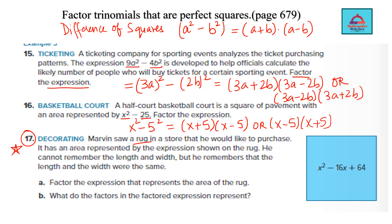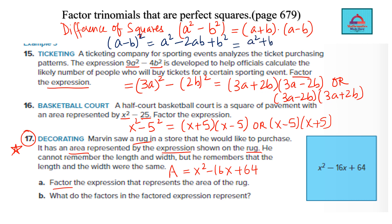A word problem: Marvin saw a rug whose area is represented by x² − 16x + 64. We use the perfect square trinomial identity: a² − 2ab + b² = (a − b)². Here 64 = 8², and the middle term is −2·x·8, which matches the pattern. So the factorization is (x − 8)².